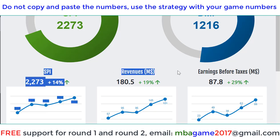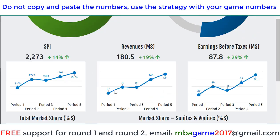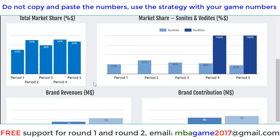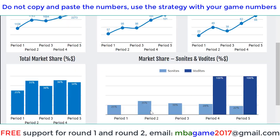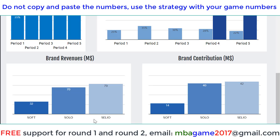Stock price index, revenue, and earnings before tax are very important — they should be increasing after each year. You can also check the brand revenue and contribution (profit) of each brand. In this example, the second product Solo and number three are selling better with top sales and better profit, so we can decide to invest more in advertising and Salesforce for those brands.